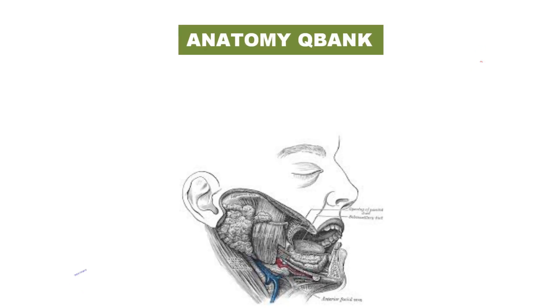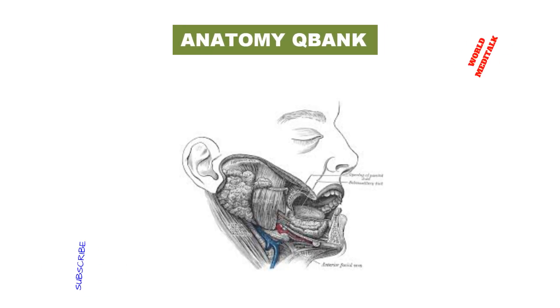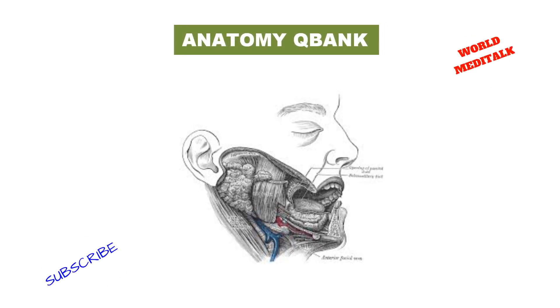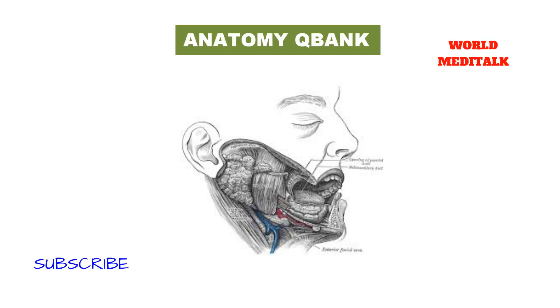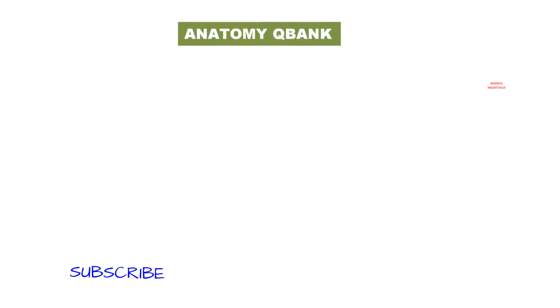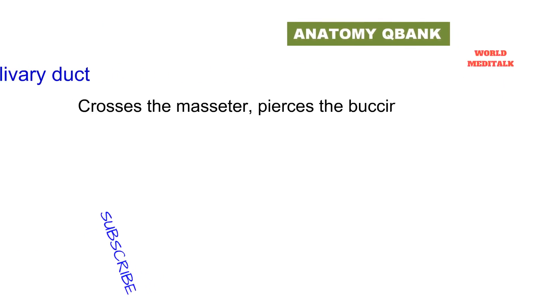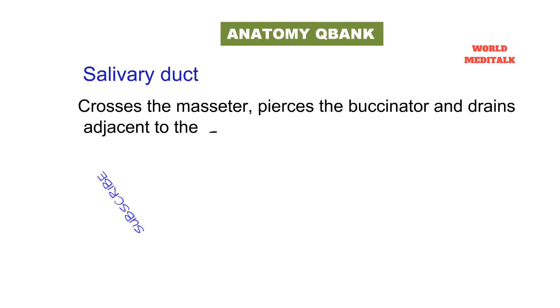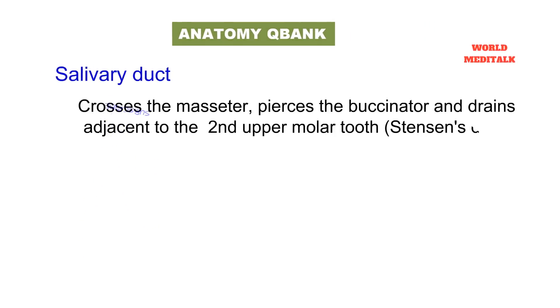Now let's talk about parotid gland anatomy. Its location is overlying the mandibular ramus, anterior and inferior to the ear. The salivary duct crosses the masseter, pierces the buccinator, and drains adjacent to the upper second molar tooth. This duct is also called Stensen's duct.